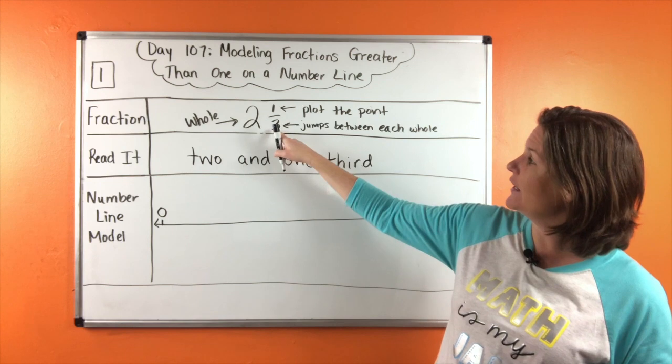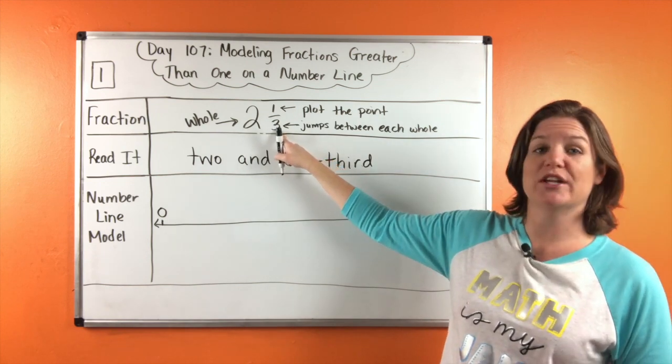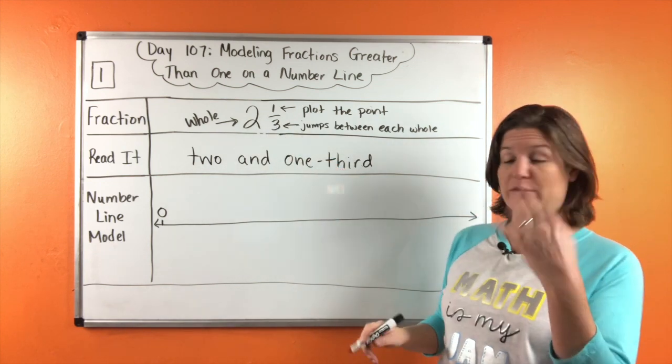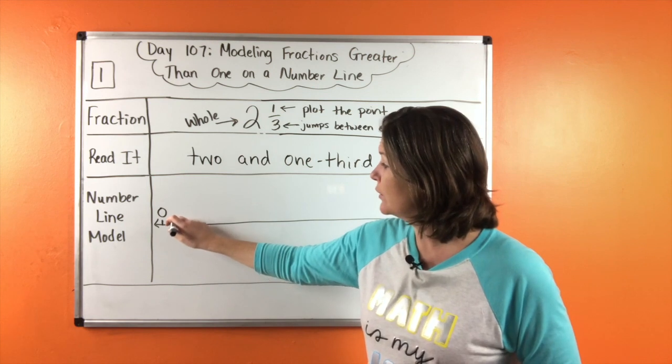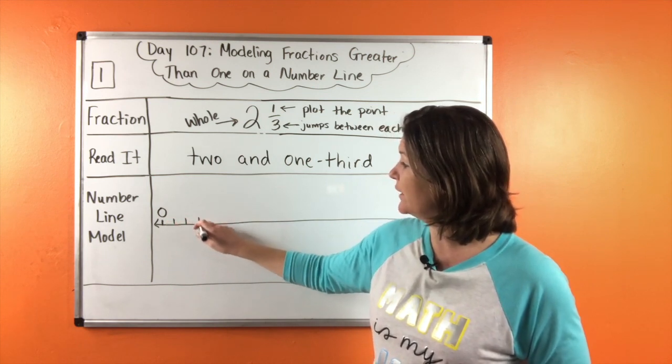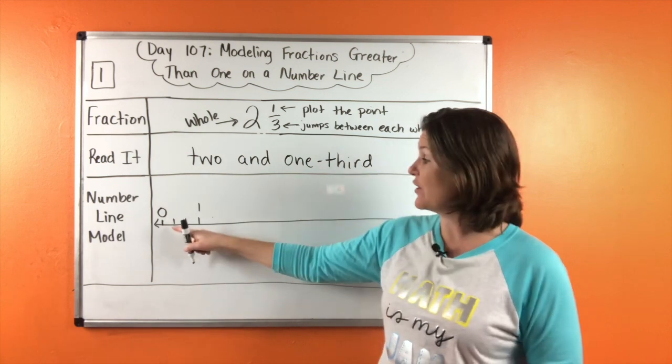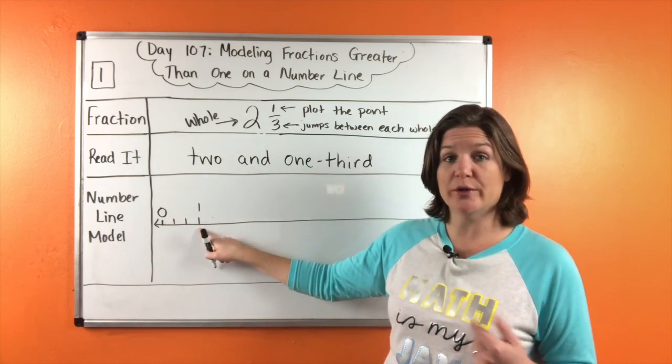And how many jumps do we have between each hole? Three, right? So one, two, three. That would be one. That's three jumps between the whole number.